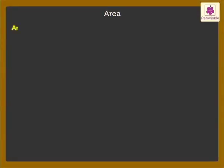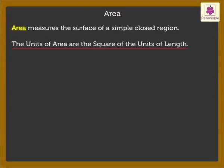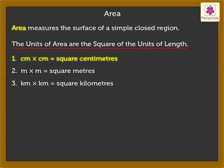What does the term area mean? Area measures the surface of a simple closed region. The units of area are the square of the units of length. Thus area can be expressed in square units such as square centimeters, square meters, or square kilometers.